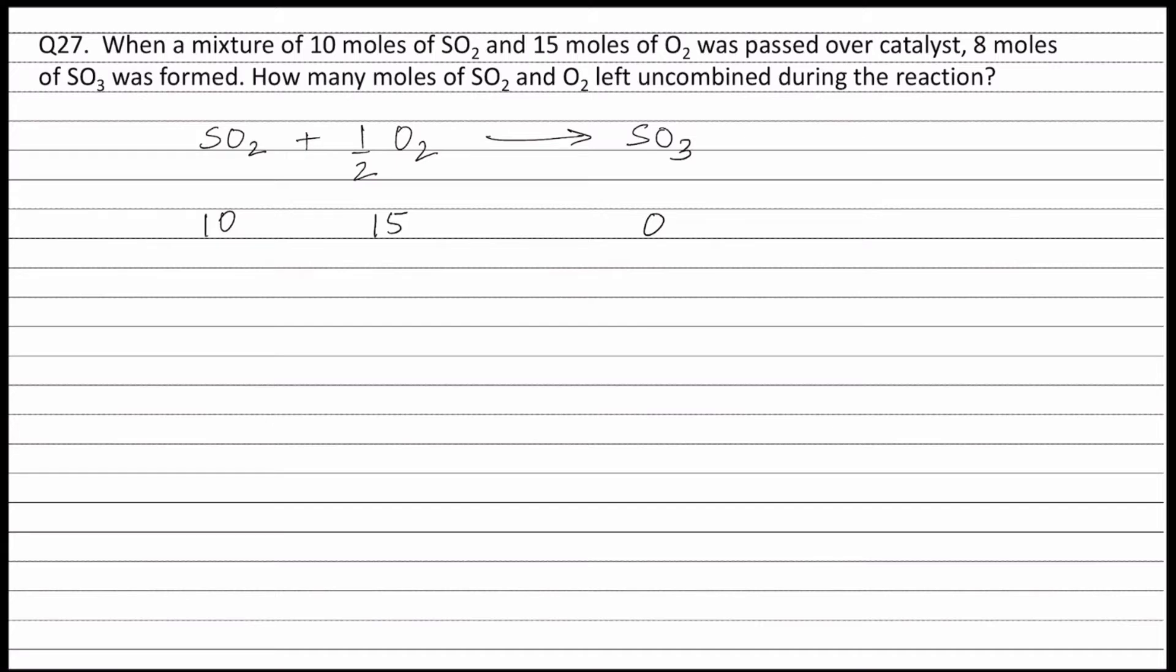As can be seen from the balanced equation, 1 mole of sulfur dioxide reacts with half a mole of oxygen to form 1 mole of sulfur trioxide.